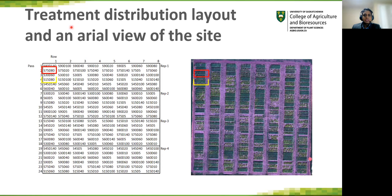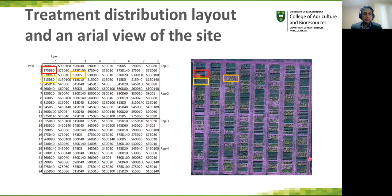This slide shows the treatment distribution layout and an aerial view of the site. You can clearly see how the main factors influence the spatial dimensions of growth. This rectangle represents 75 centimeter spacing and 80 plants per square meter seeding density. In comparison, this rectangle shows 30 centimeter spacing and 5 plants per square meter, so you can see the spatial distribution of plants at lower densities is very sparse compared to higher densities.